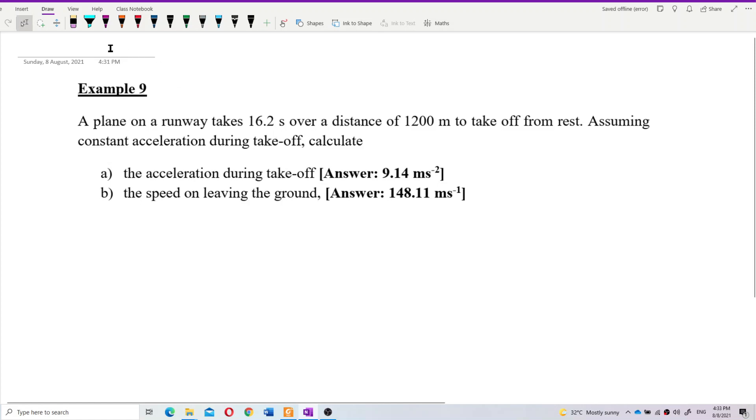So this is a uniformly accelerated motion. What information given here? We have the time taken. It travels a distance of 1,200. This is the displacement to take off. Take off from rest. That means this initial velocity is 0.